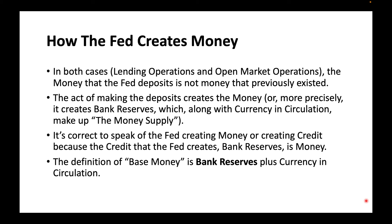In both cases — lending operations and open market operations — the money that the Fed deposits is not money that previously existed. The act of making the deposits creates the money. Or, more precisely, it creates bank reserves, which along with currency in circulation make up the money supply. So it's correct to speak of the Fed creating money or creating credit, because the credit that the Fed creates — bank reserves — is money.